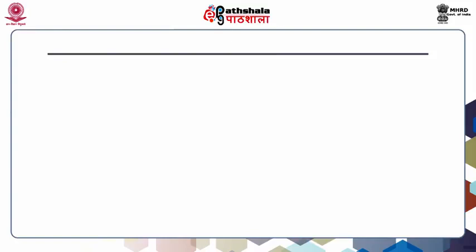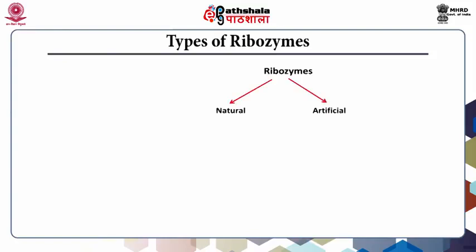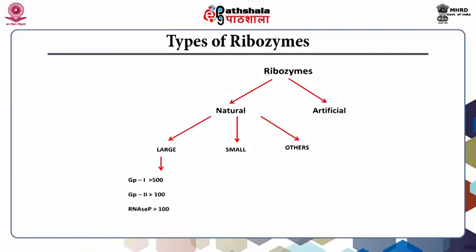This slide indicates the types of ribozymes. Ribozymes can be natural or artificial. Natural ribozymes can be further classified as large, small, or others. The large ones include Group 1 and Group 2 introns as well as RNAs P, whereas the small ones include the hammerhead, hairpin, HDV, etc. Under others, we have the spliceosome and the ribosome.